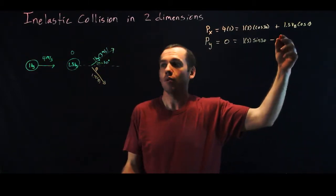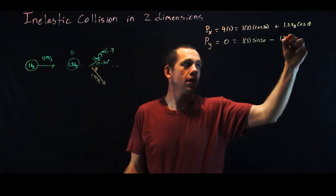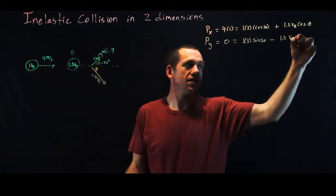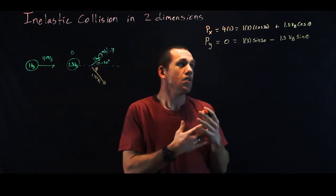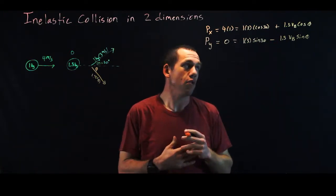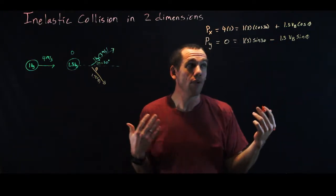So I'm just going to go ahead and subtract 1.5 vb times the sine of the angle phi, right? So there's my law of conservation of momentum in two dimensions.